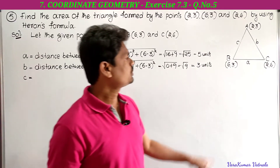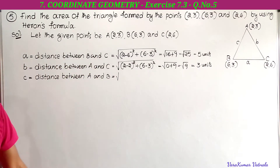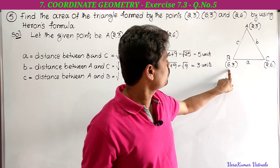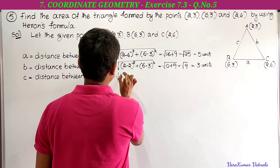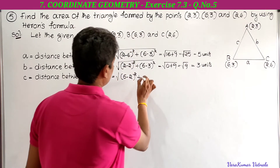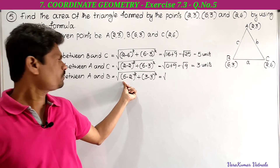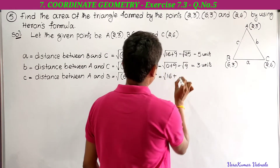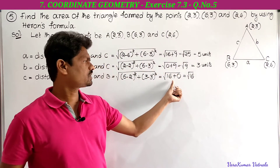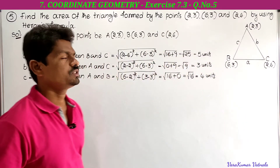c equals the distance between A and B. With A(2,3) and B(6,3): (6−2)² = 16, and (3−3)² = 0. So c = √(16+0) = √16 = 4 units. Now we have a=5, b=3, c=4.